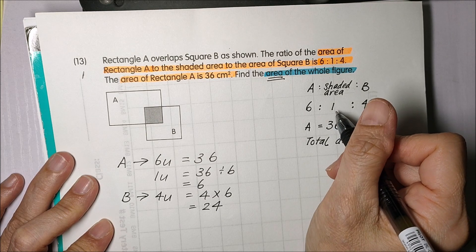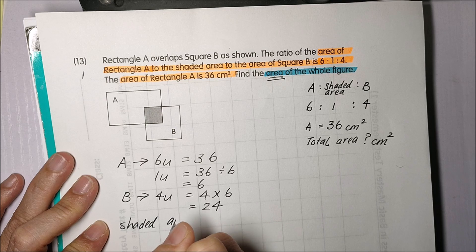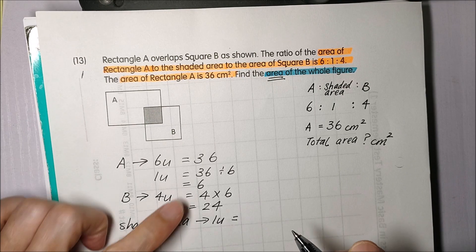Do I know the shaded area? Yeah, because it's 1 unit. So I'm just going to write it here. Shaded area is actually 1 unit which is equal to 6.